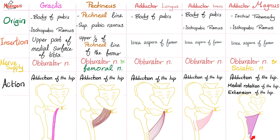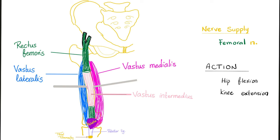There's a hole here called the adductor hiatus. The femoral vessels pass through here — the femoral artery passes here and goes behind the femur to become the popliteal artery. Very important. Now let's leave the medial compartment and focus on the anterior compartment.